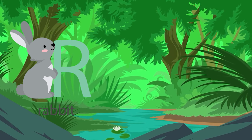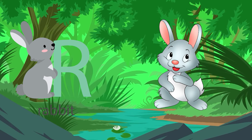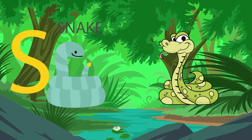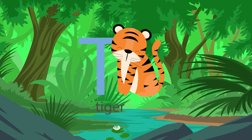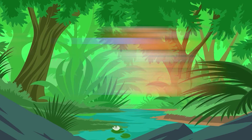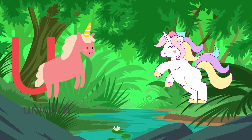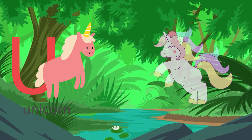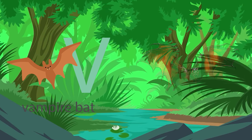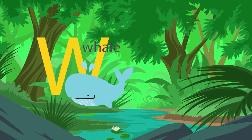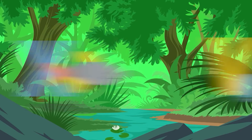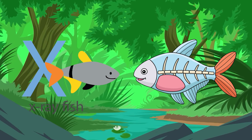R for rabbit. S for snake. T for tiger. U for unicorn. V for vampire bat. W for whale. X for x-ray fish.